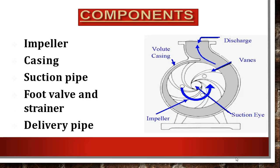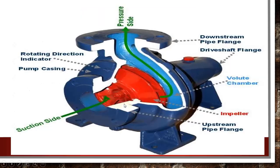The main components of centrifugal pump include the impeller, casing, suction pipe, foot valve and strainer, and delivery pipe. As you can see in this picture, inside the casing, this is the impeller in which guide vanes are placed. The area of the centrifugal pump casing is gradually increasing. This is the volute casing, this is the impeller, and this is the eye of the impeller or the suction eye.